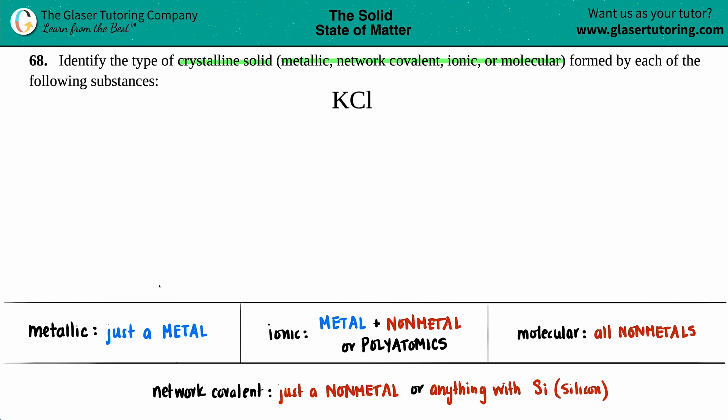Well, the general rules are down below, so we'll go one by one and pick the one that's right for the compound of potassium chloride, which is KCl. Metallic crystalline solids are always going to be formed when you just see a metal, so if I just had potassium or I just had copper or I just had iron.